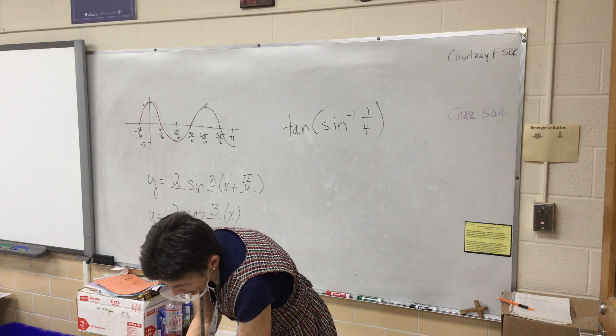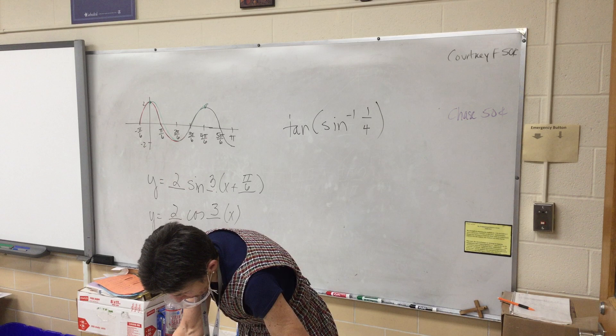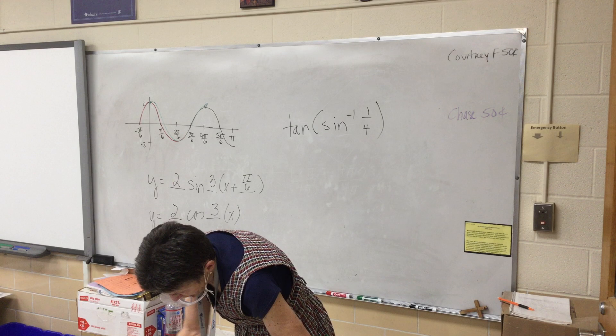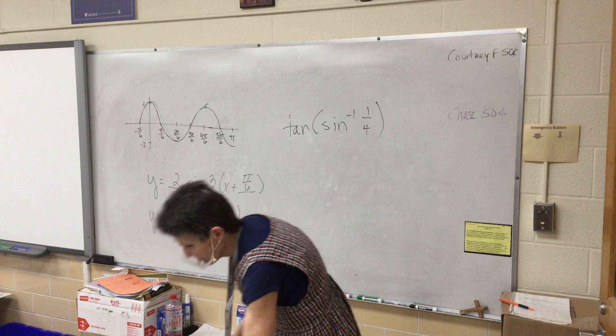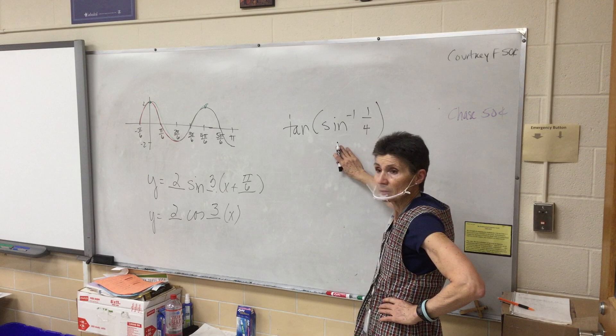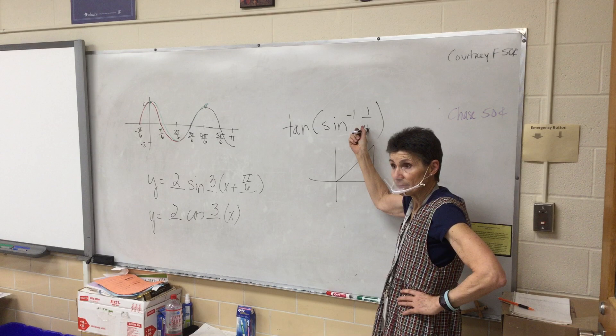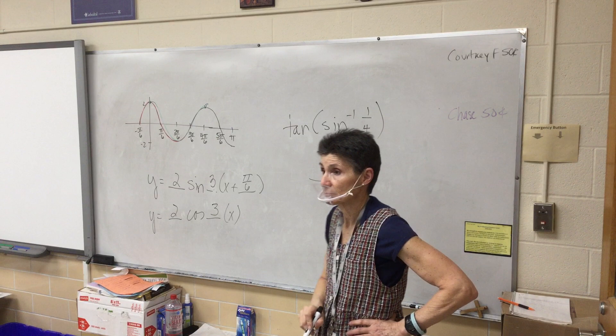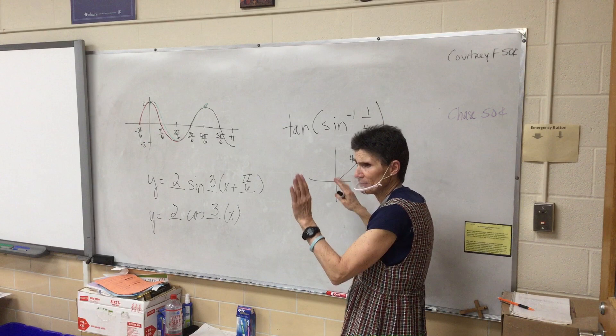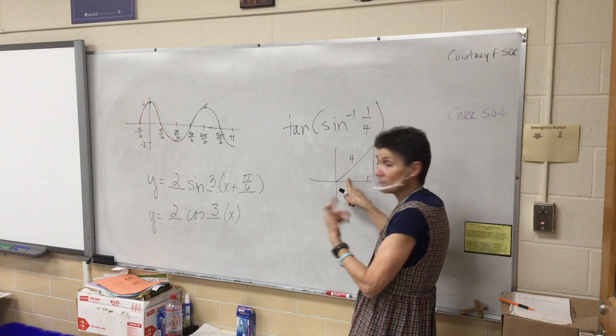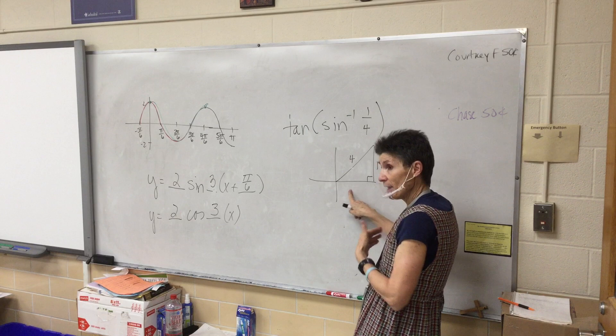Where is that angle? I'm going to draw that picture in quadrant 1 because that's a positive number. The sine is 1/4. Is this going to be a special angle? No — this is not special like a 1 and 2 triangle. But can I find the third side anyway? Let's find the third side.